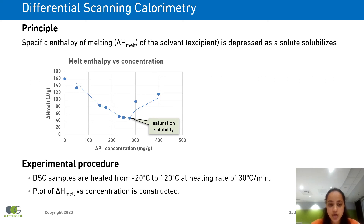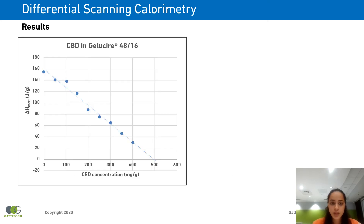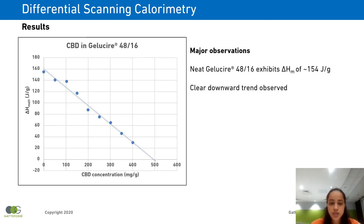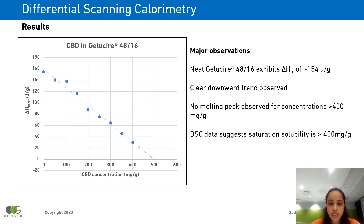The experimental procedure here involves heating the DSC samples from minus 20 degrees C to 120 degrees C at a heating rate of 30 degrees C per minute. Moving on to our example of CBD in Gelucire 48/16: Gelucire 48/16 on its own exhibits a melting enthalpy of 154 joules per gram. As the concentration increases, a clear downward trend is observed. No melting peaks were observed for concentrations of CBD in Gelucire 48/16 greater than 400 mg per gram. DSC data suggests that the saturation solubility of CBD in Gelucire 48/16 is greater than 400 mg per gram.